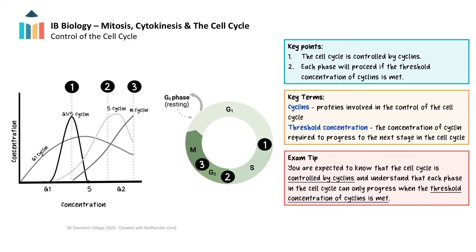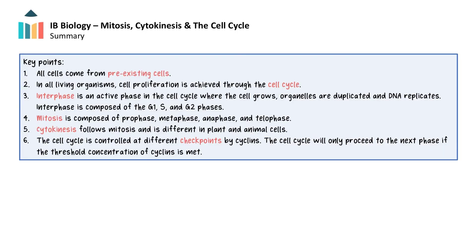If a cell does not meet the concentration required for any of these checkpoints, it will not progress into the next stage. If a cell doesn't meet the requirements, it will either pause, undergo appropriate repair, or be programmed for cell death — a process called apoptosis. You are expected to understand the significance of the threshold potential in regulating the cell cycle. Understanding the concepts shown in this video is important because they reveal how cells normally grow and divide and why precise regulation is crucial for maintaining cellular health.